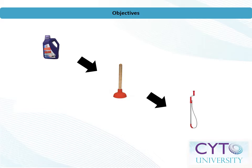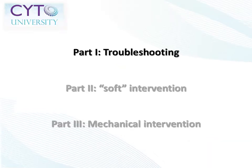May we never forget Shapiro's first law of cytometry: a 51-micron particle clogs a 50-micron orifice. Part 1: Basic Troubleshooting.